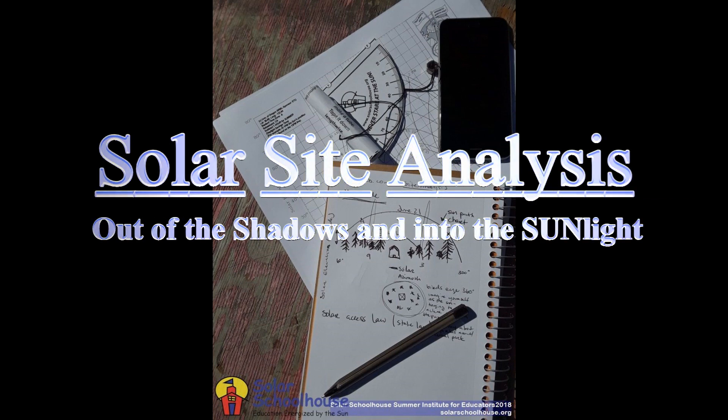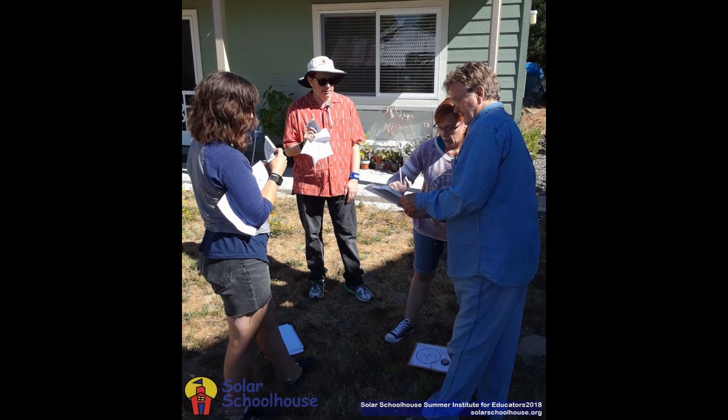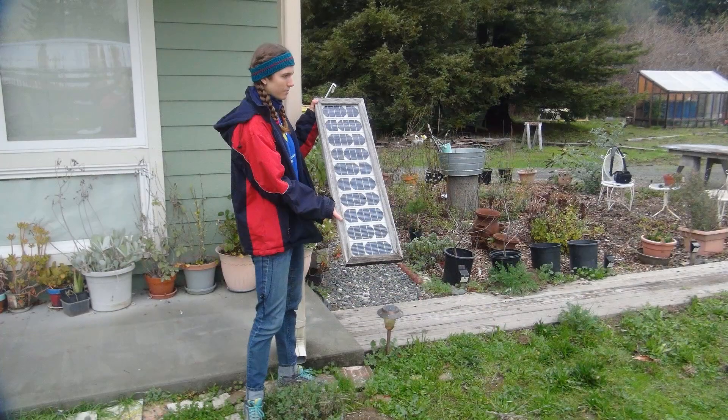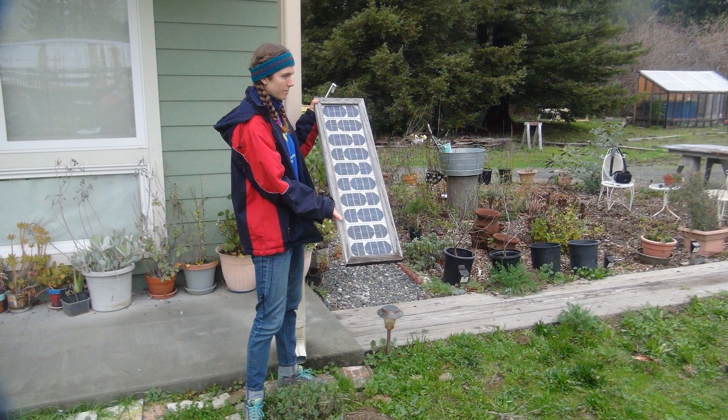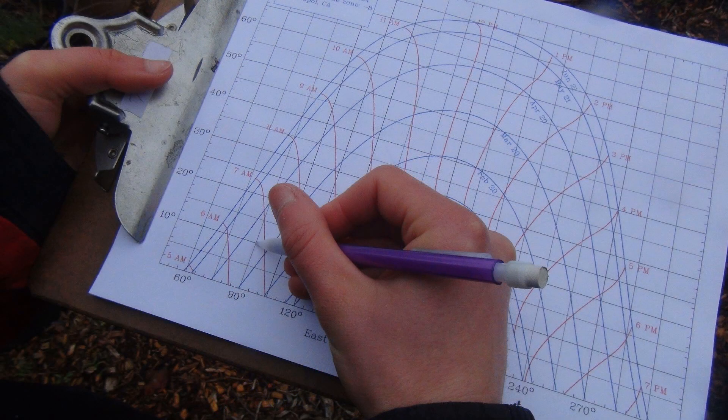When setting up a solar system or designing a solar building, you should always conduct a solar site analysis of the proposed location to find a placement with minimal shading from nearby trees and buildings. A typical goal is to minimize shading between 9 a.m. and 3 p.m. throughout the year, assuming a south-facing solar panel placement.